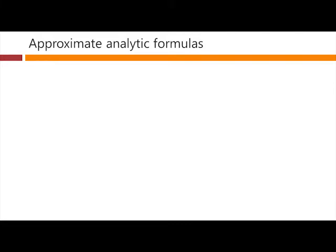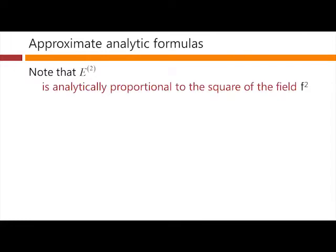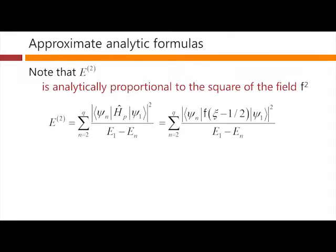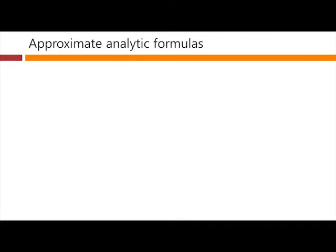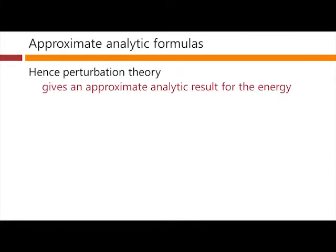Now, one of the great benefits of perturbation theory is that it gives us formulas. So far, we've only been working out the answer for a very specific field. But in fact, perturbation theory will give us a formula for the answer. Note that this second-order energy correction, for example, is analytically proportional to the square of the field. So in this matrix element here, we've got the field buried inside there. Here it is explicitly. So we can pull that out as a square out the front. So this is a number that we can work out. This summation here is just a number multiplying the field squared. So we've now got a formula for the energy correction. Hence, perturbation theory gives an approximate analytic result for the energy, which we can now use for any field.